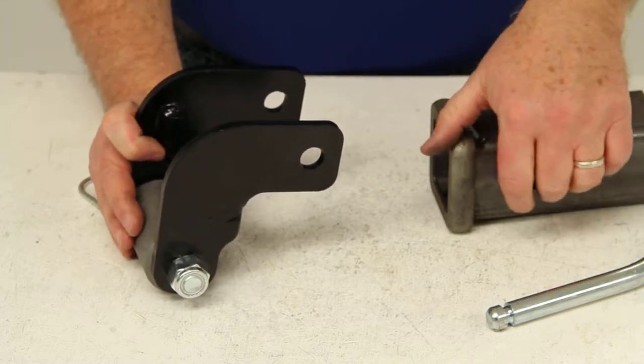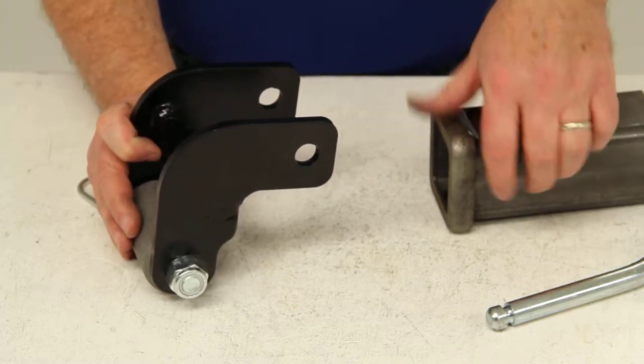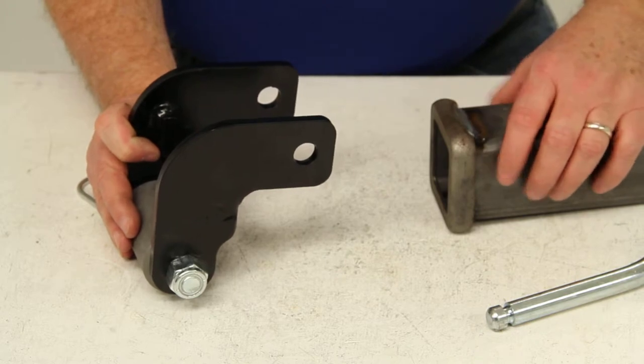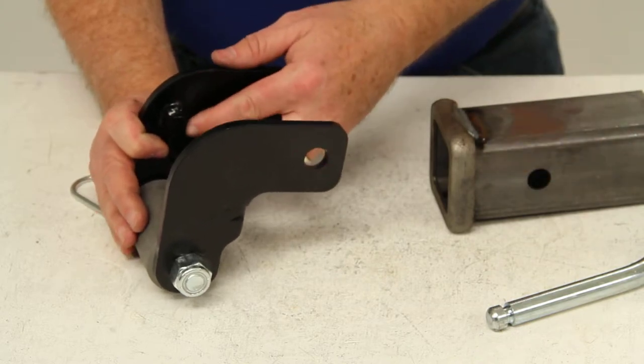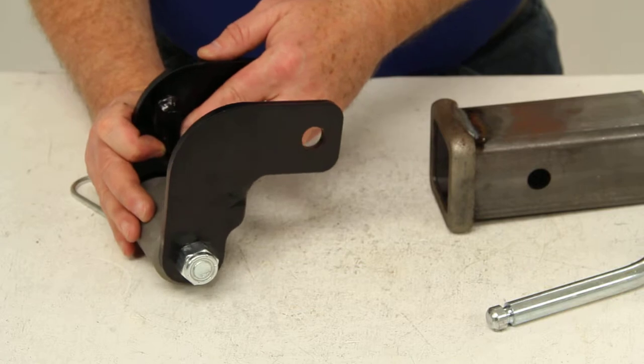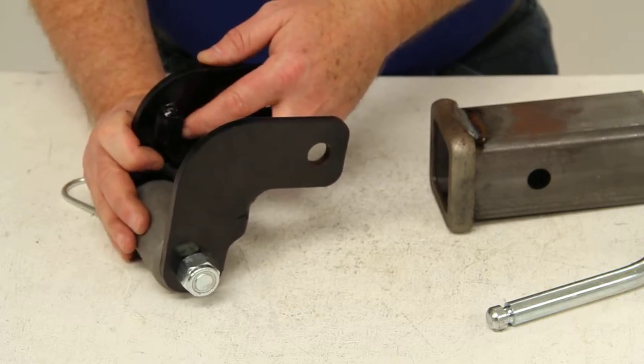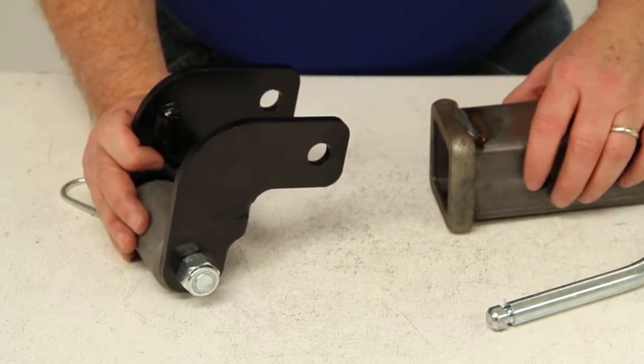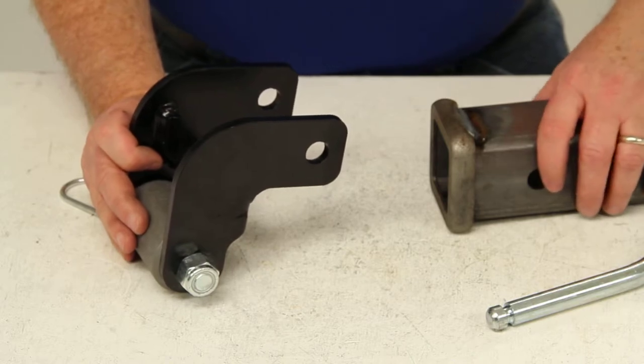Now if this distance on your hitch receiver is less than 2 and 7 sixteenths, there will be a gap between this bar and the hitch. If that gap is less than 1 eighth of an inch, it will still work fine.